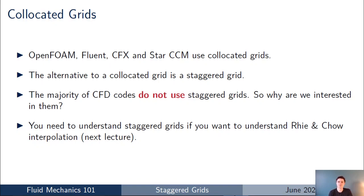So if the majority of CFD codes use co-located grids, why am I talking about staggered grids? Why do you even need to know about them? Staggered grids are important if you want to understand the Rhie-Chow type interpolation we're going to go through in detail next lecture. It's really important that you understand staggered grids because they form the foundation of the technique used by Rhie and Chow in their interpolation scheme.